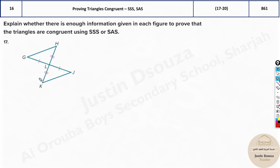Now let's look at the figure. You can see they have indicated these two sides are equal, and these two sides are also equal. So can we prove this is congruent using any of these postulates? Yes. If you look carefully, there are vertically opposite angles — these are vertical angles — and they are congruent to each other. So you have S, A, and S.